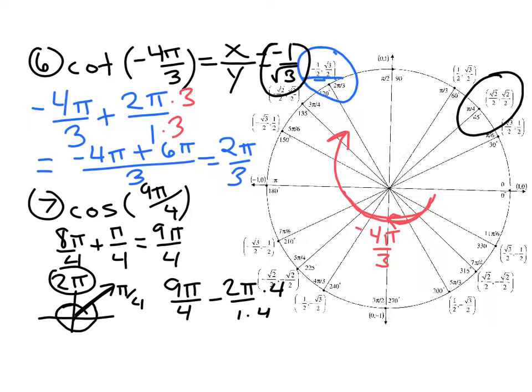So once you know you're in this position, then it's fairly simple. Cosine is the x-coordinate. So the value I'm looking for is the square root of two over two.